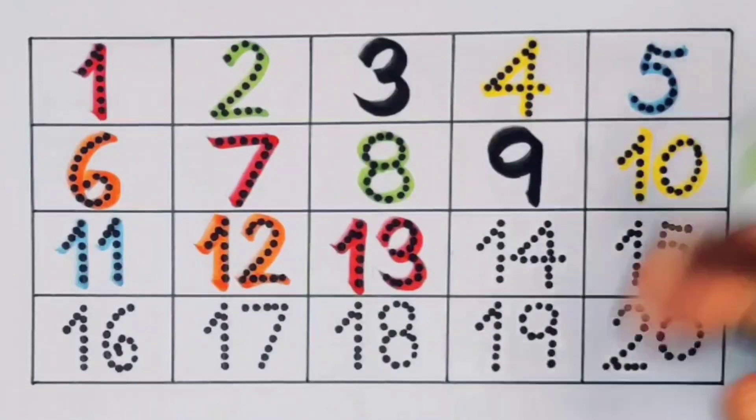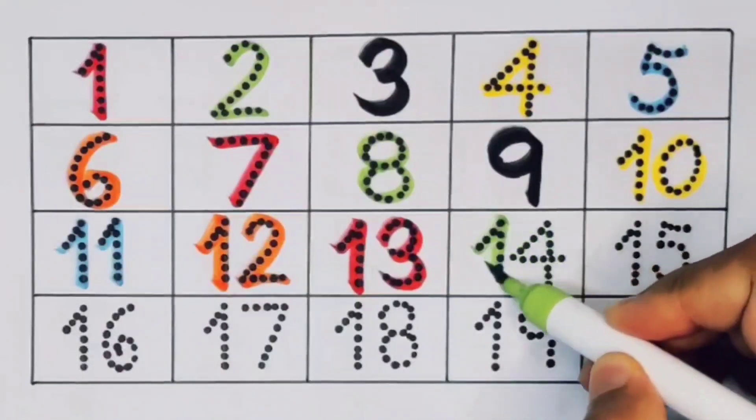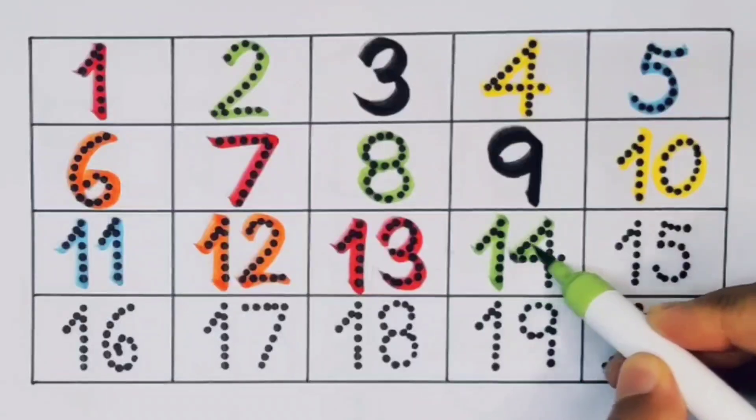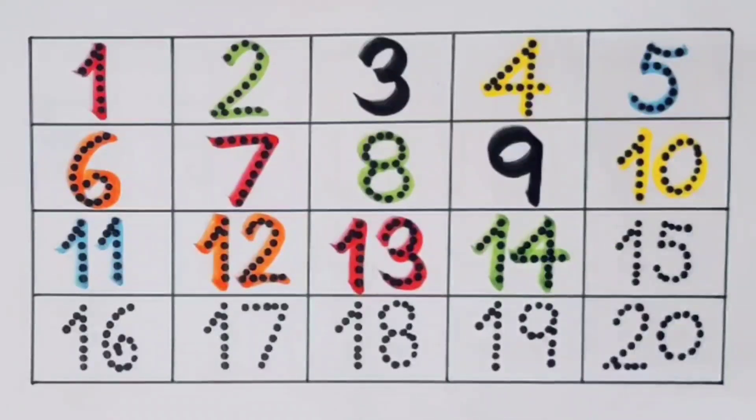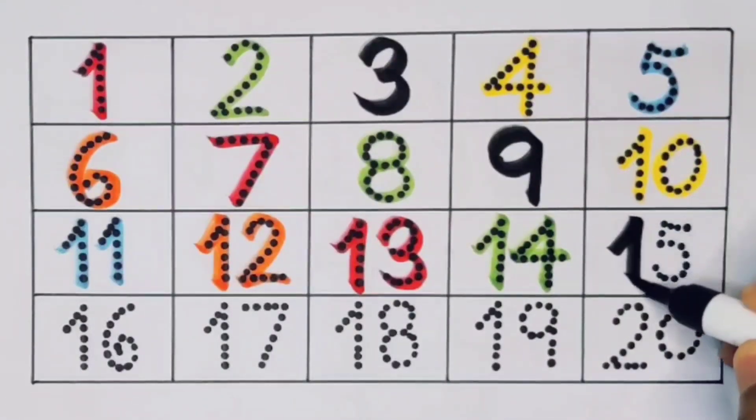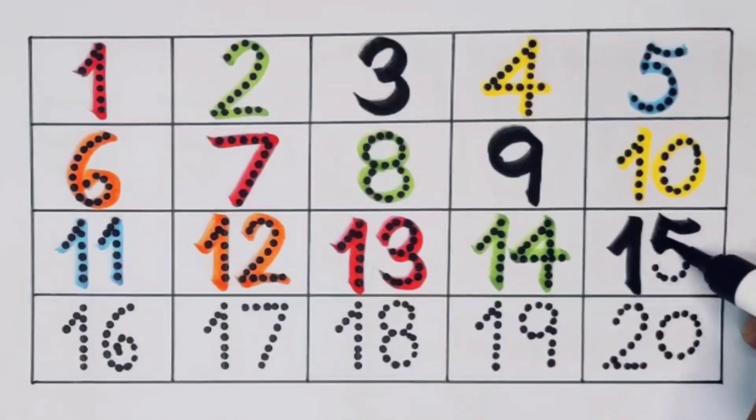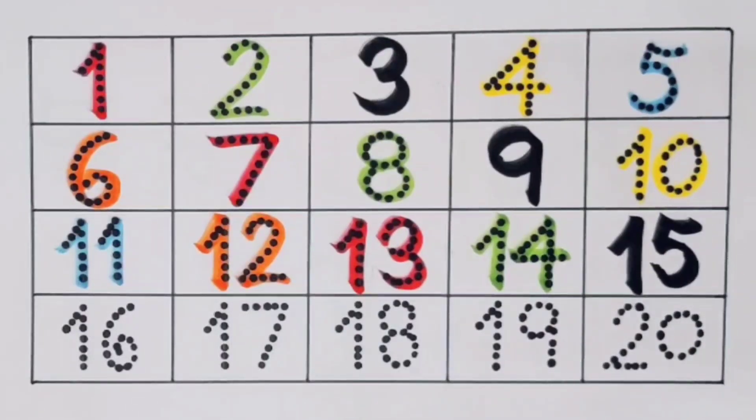Next kids 14. 1. 4. 14. Number 14. Next kids 15. 1. 5. 15. Number 15.